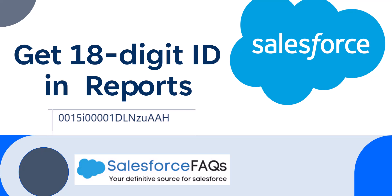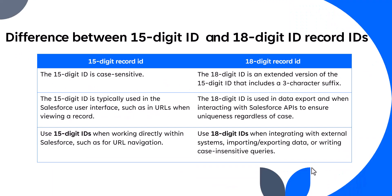As you can see on my screen, this is how an 18-digit record ID looks like in Salesforce. The 15-digit ID is case-sensitive — the alphabets mentioned in the record ID, if they are in lowercase, you have to refer to them as lowercase every time you use this 15-digit ID. Whereas the 18-digit ID is an extended version of the 15-digit and it is case-insensitive, so you don't need to worry about lowercase or uppercase while using the 18-digit ID.